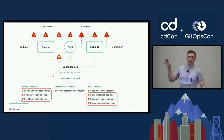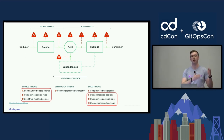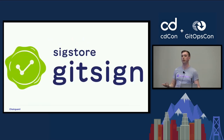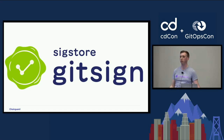Going back to that chaotic supply chain graph, you'll notice a similarity between source threats and build/package threats — submit unauthorized change versus upload modified package, compromise source repo versus compromise package repo. The question is: can we take the SigStore model used for packages and artifacts and apply it to source signing? That's where GitSign comes from — applying SigStore modeled for Git commit signing, so we have rich identity metadata to make smarter policy decisions about our source code, treating it with the same level of security as our packages and containers.